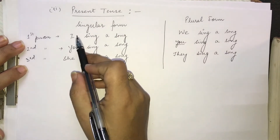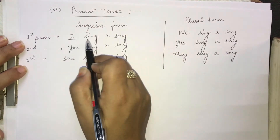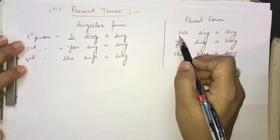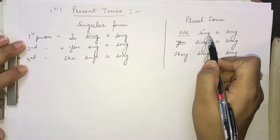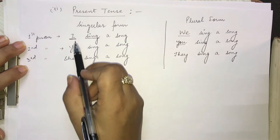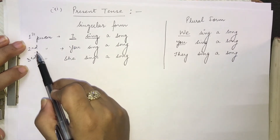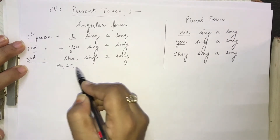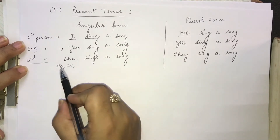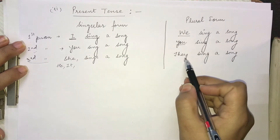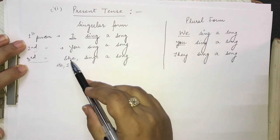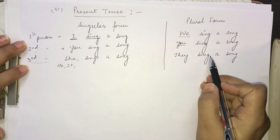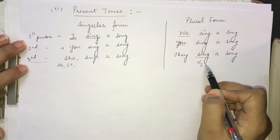Now the difference between the forms is: for 'I' (first person), it uses 'sing' — just sing. For 'we' (plural), it is also 'sing.' But for the third person — she, he, or it — it becomes 'sings a song.' She sings, he sings, it sings. When he or she becomes 'they' in plural, it goes back to 'sing a song,' because it is plural. We won't be using S or ES behind sing — it will remain 'sing' in V1 form.